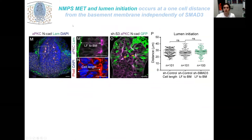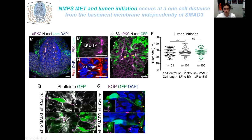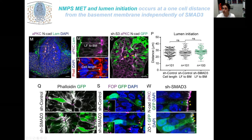We then moved to the next step: mesenchymal-to-epithelial transition and lumen initiation. In wild type, lumen initiation occurs always at one cell distance from the basement membrane, labeled in green by laminin. In the SMAD3 knockdown, the same happens — multiple lumens appear at one cell distance from the basement membrane. Moreover, SMAD3-knockdown cells are able to elongate, locate centrosomes at the apical pole, and enrich apical components like ZO1, E-cadherin, or atypical PKC. Thus, lumen initiation occurs independently of SMAD3.